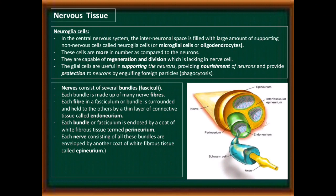A nerve consists of several bundles called fasciculi. Each bundle is made up of many nerve fibers. Each fiber within a fasciculum is surrounded and held together by a thin layer of connective tissue called endoneurium. Each bundle or fasciculum is enclosed by a coat of white fibrous tissue called perineurium. Each nerve consisting of all these bundles is enveloped by another coat of white fibrous tissue called epineurium. All the parts are shown in this diagram.